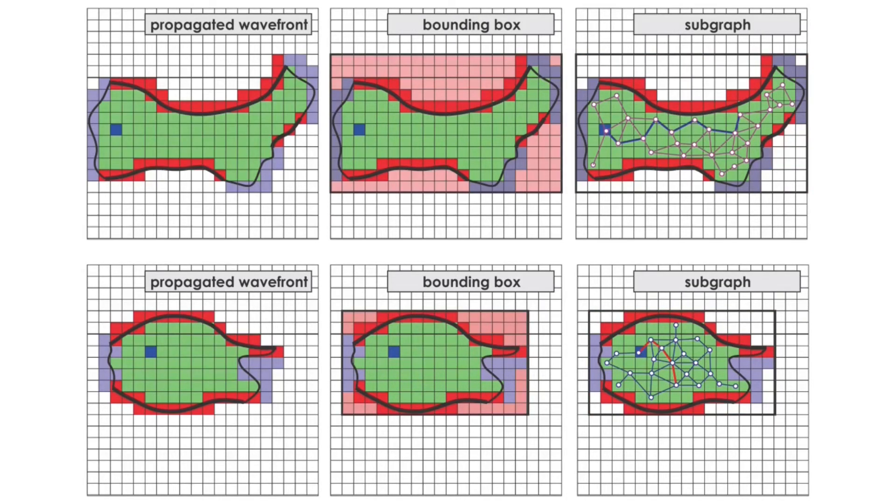Subsequently, points are sampled in the bounding box calculated in the previous step. Exploiting the occupancy representation, these points are checked to be collision-free. Those passing the check and thus being traversable are then added to a subgraph.